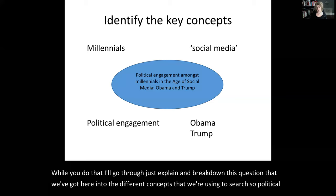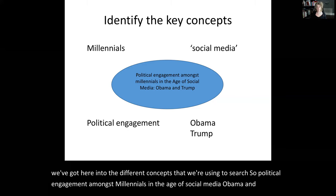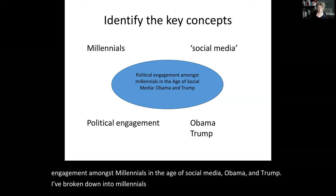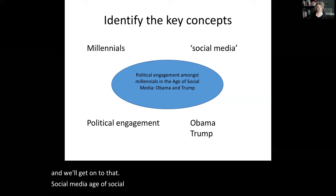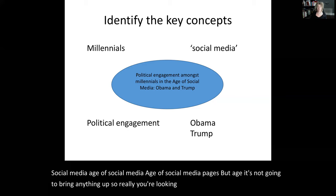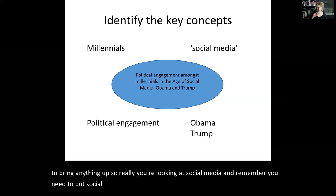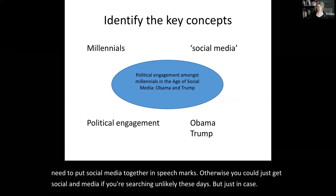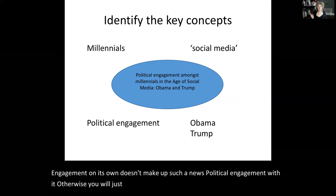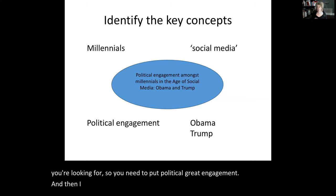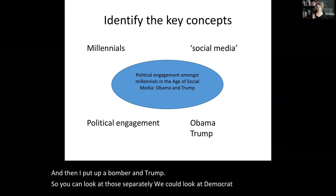So looking at the example question — 'political engagement amongst the millennials in the age of social media: Obama and Trump' — I've broken it down into: millennials (the group we're talking about), social media (you need to put 'social media' together in speech marks otherwise you could just get 'social' and 'media' separately), political engagement (on its own 'engagement' doesn't make much sense), and then Obama and Trump, which you can also approach as Democrat or Republican.